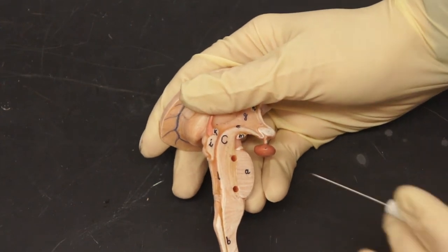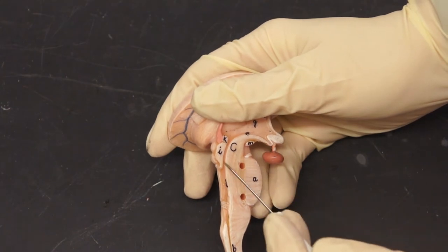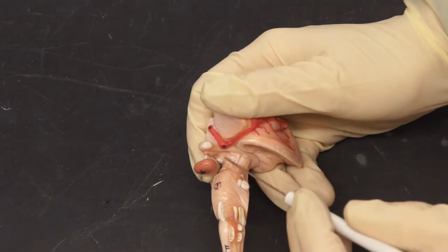And then here, we have the aqueduct of midbrain and the tegmentum, this region here. And if we come around here, we have the cerebral peduncles.